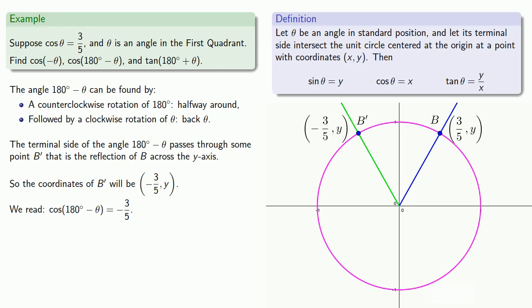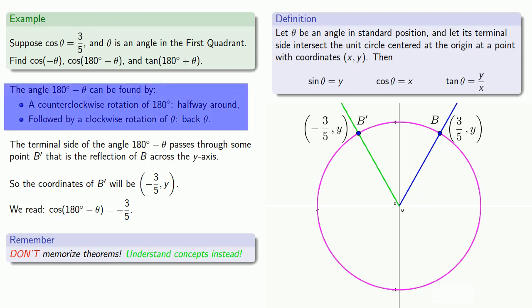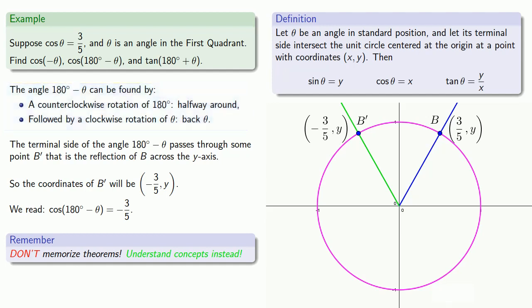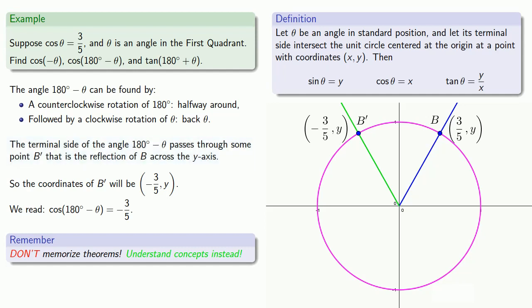And this is an example of a theorem, but again, the theorem isn't worth memorizing. What's more important is understanding this concept of measuring the angle by a rotation, then locating the terminal side by a reflection, and remembering that the cosine is the x-coordinate.